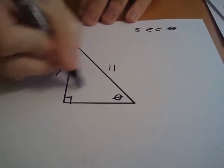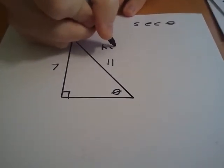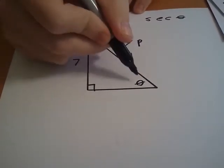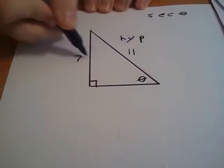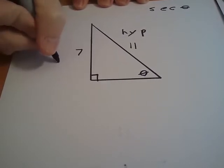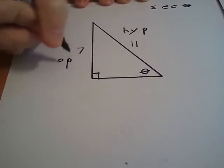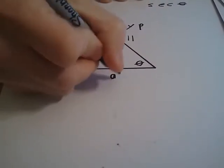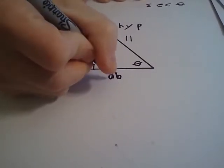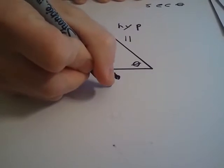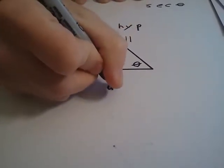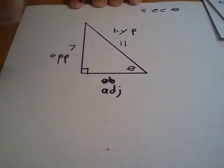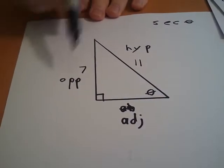This side, across from the right angle, is my hypotenuse. This one that goes, that's the total opposite of the angle here, is the opposite. And that means that this one, again, is going to be my adjacent. Try writing upside down sometime. It's not easy. Okay, adjacent. Opposite. Hypotenuse.